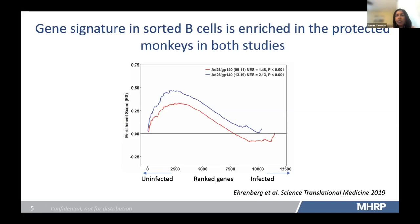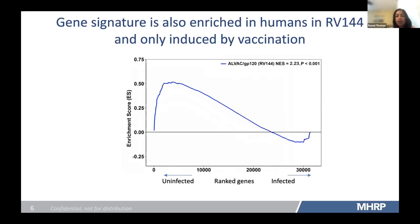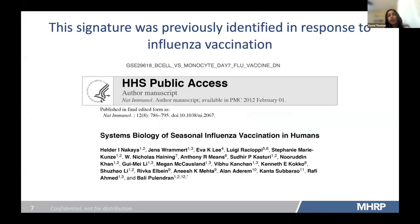How about humans? For this, we turned to the RV144 study, which showed partial protection previously. The vaccine regimen is different, but microarray data was available from PBMCs at two weeks after the fourth vaccine. We saw that this gene signature was present in the uninfected vaccinated people compared to those who were infected. We think this is induced by vaccination because we didn't find it in the placebos. The signature was previously identified in response to influenza vaccination when comparing B cells to monocytes after day seven of flu vaccine, suggesting it might be a broad indicator of effective vaccination.